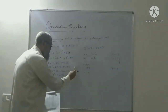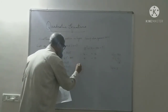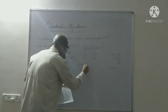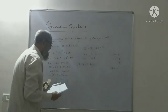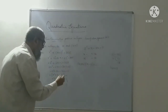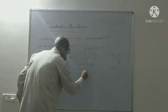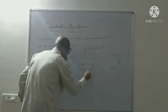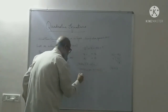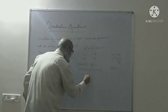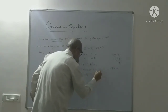So the factors are (x + 14)(x − 13) = 0. Therefore x + 14 = 0 gives x = −14, or x − 13 = 0 gives x = 13.